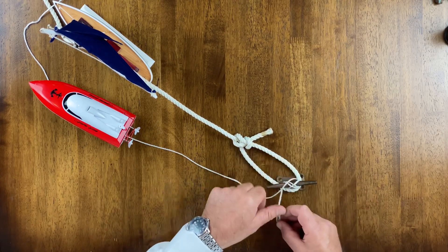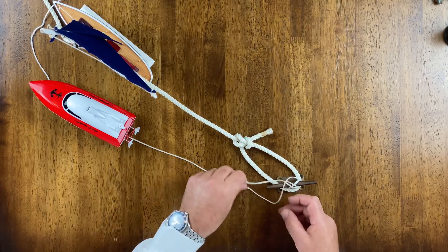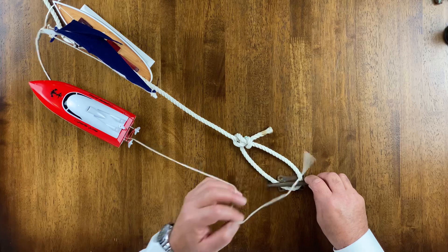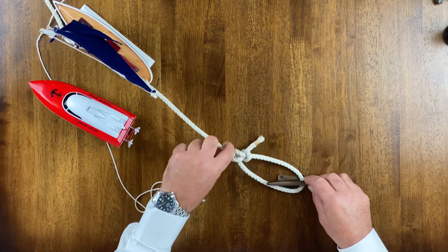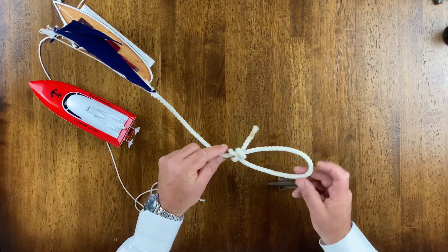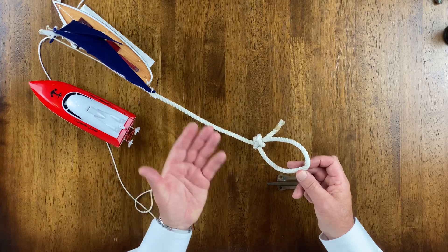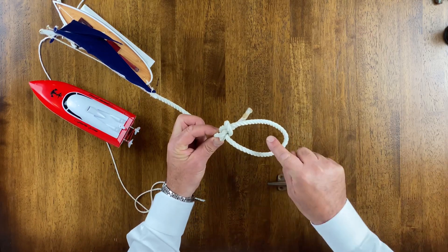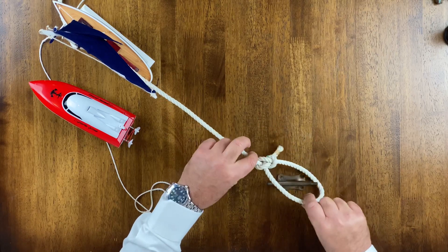For example, if you're coming in to a fuel dock, there's usually a kid there who wants to take your lines, or someone sees you coming and they're trying to be helpful. That's great - if you just give them a bowline, you say 'put it on that cleat there' and leave it alone.